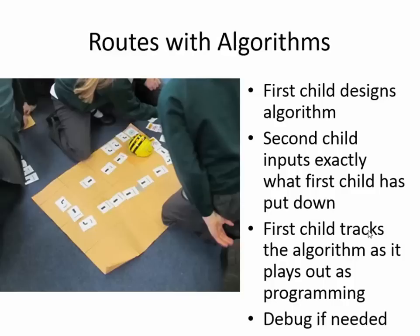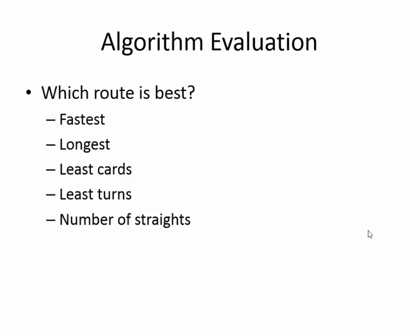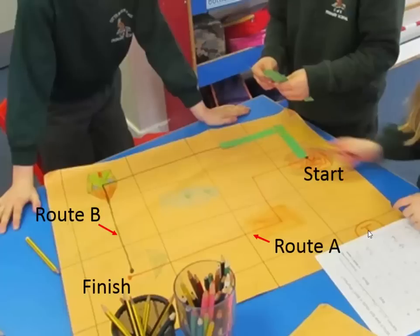We did lots of route work, sometimes open route work not involving the roads, and with children further along we encouraged using the roads and map features including pauses. Then we asked the children which route was the best, and they came up with ideas like the fastest route, the longest route, the least number of cards, the least turns, or the number of straights.